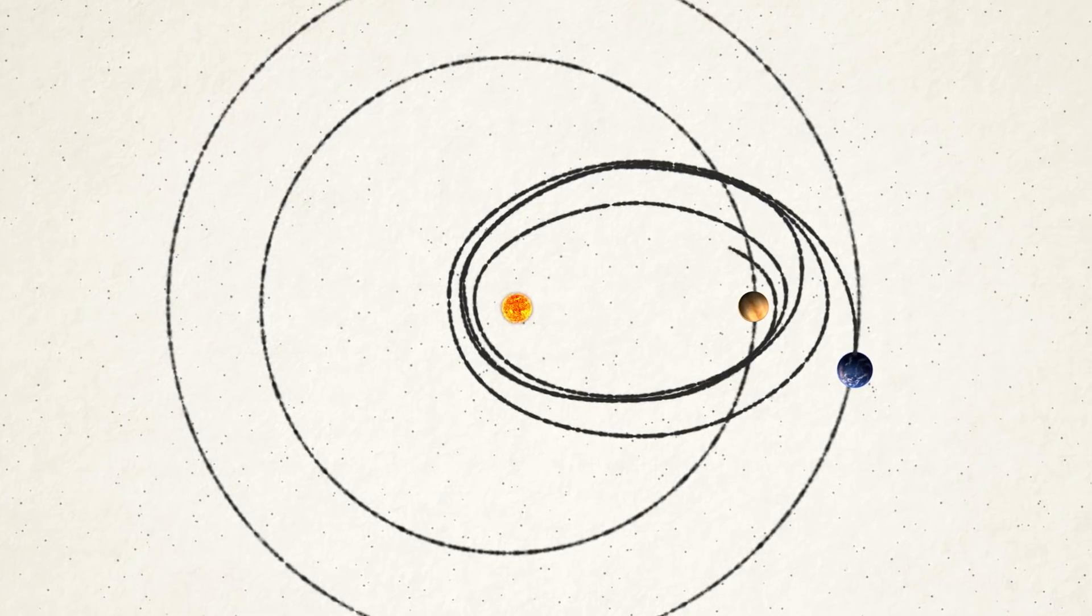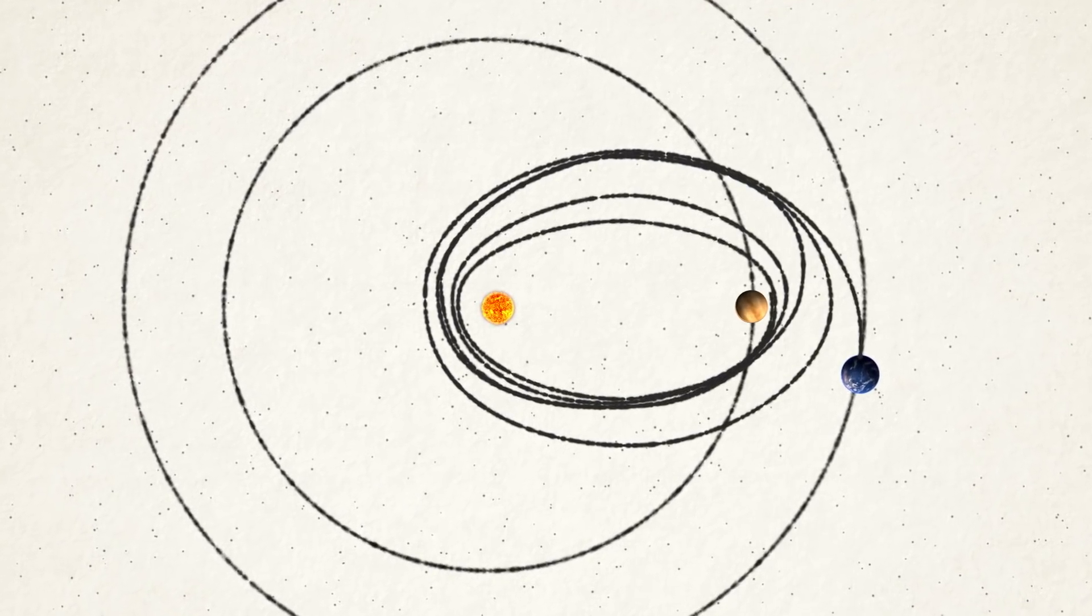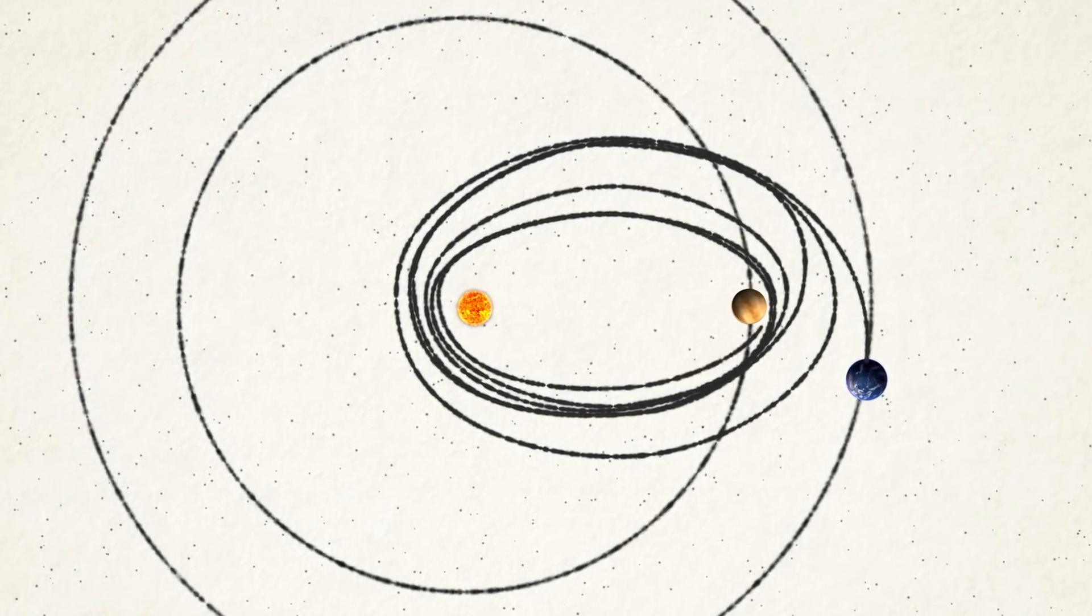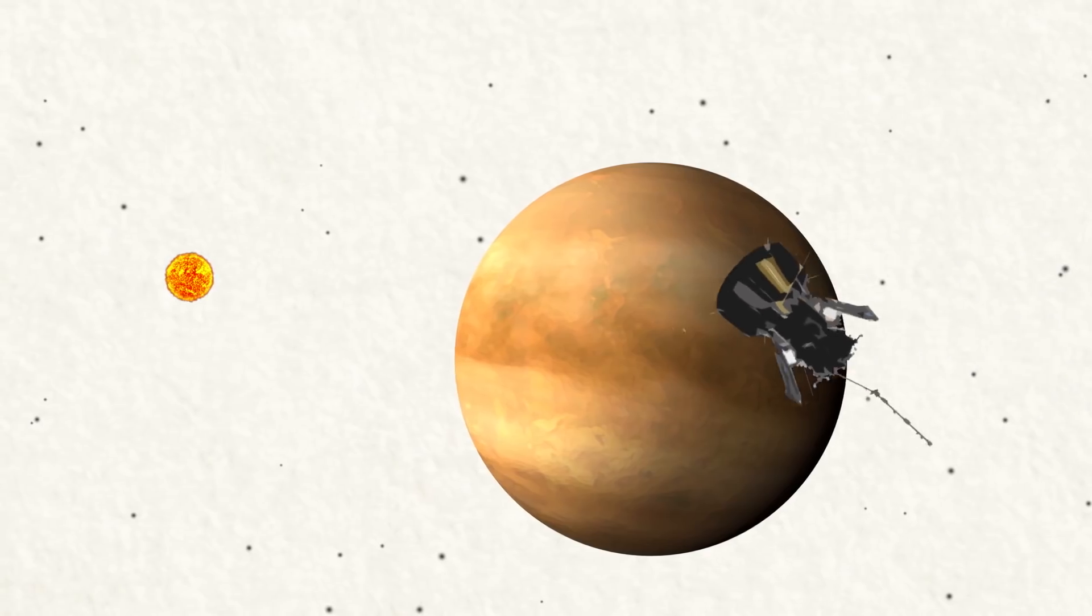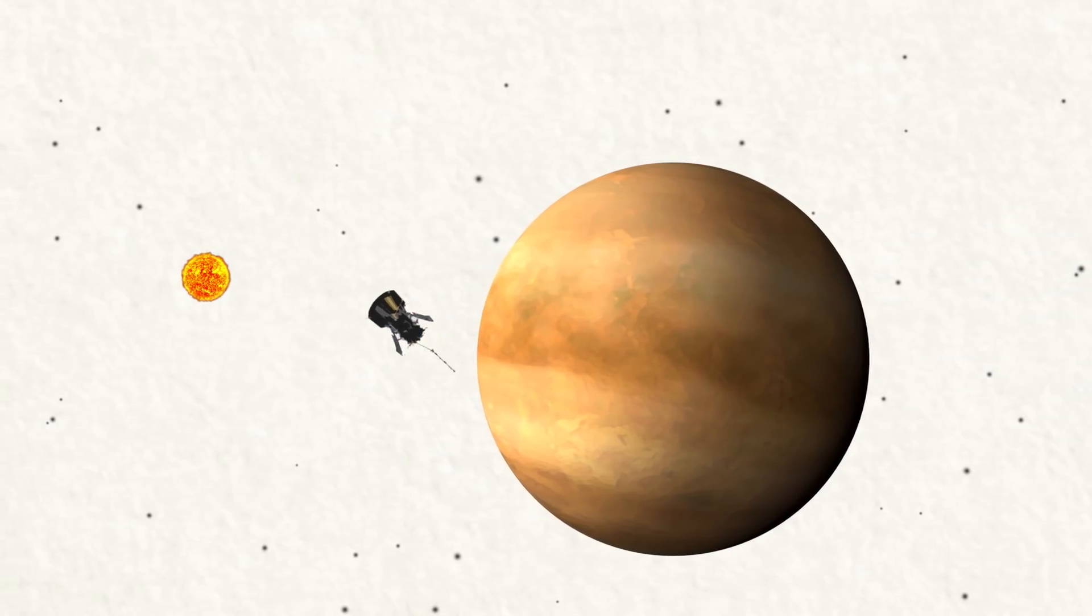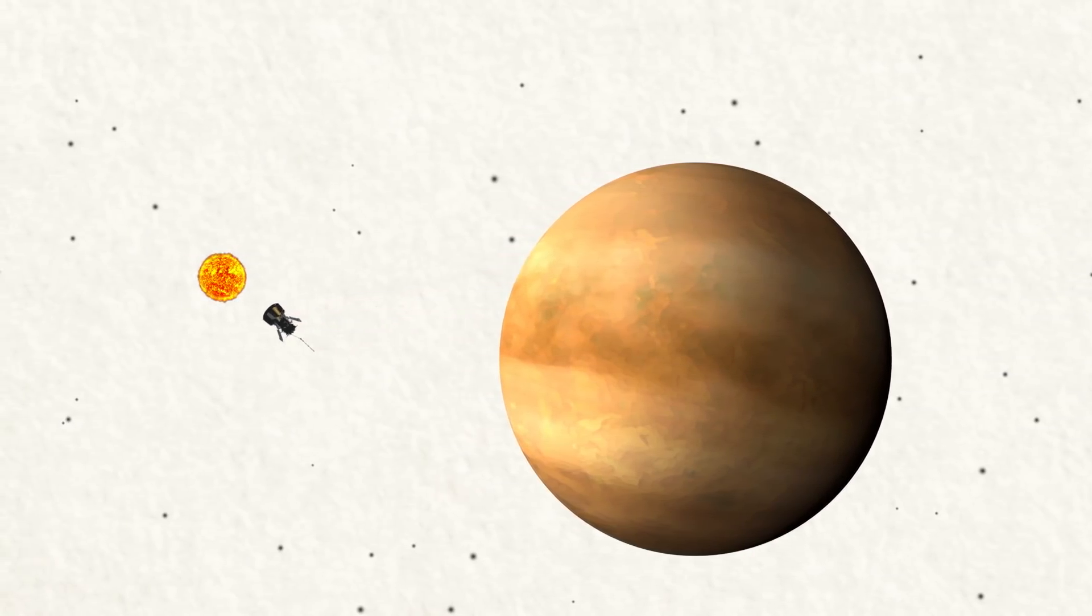That's why it's using one of the most powerful rockets available, and additional gravity assists from Venus over a period of several years. In this case, rather than speeding up the spacecraft as in a typical gravity assist, Venus slows down its sideways motion, so the spacecraft can get close to the Sun.